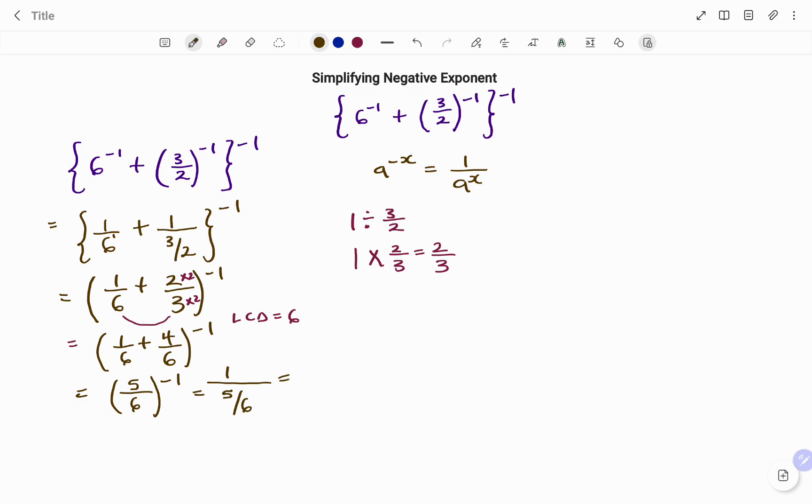This gives me 1 divided by 5 over 6, which is the same as 1 times 6 over 5. My final answer is 6 over 5.